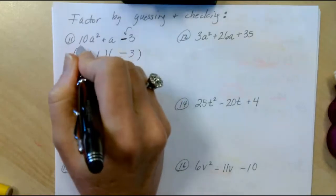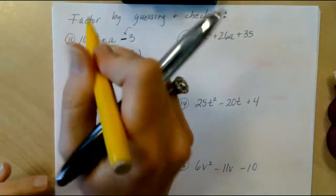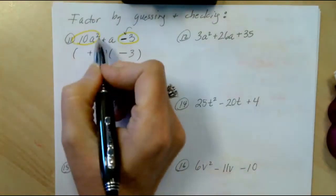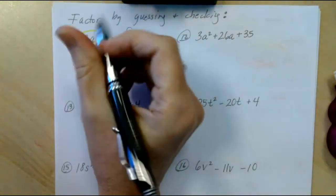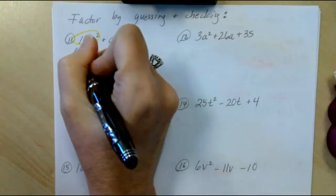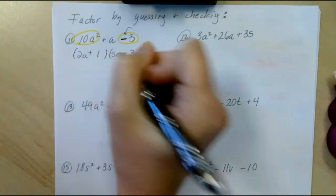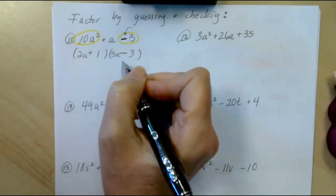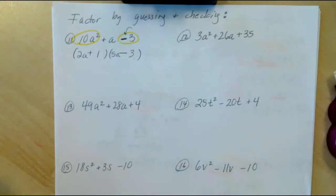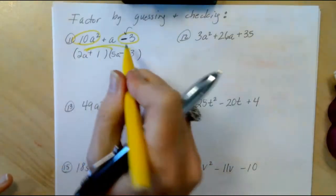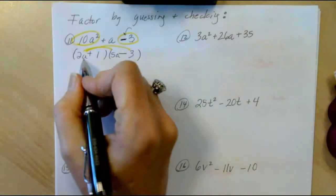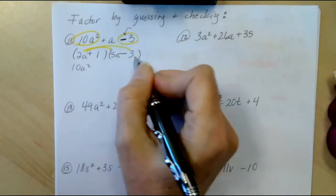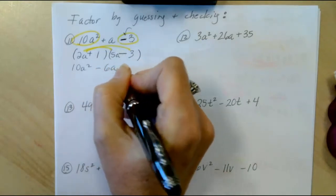Up front, remember we're only going to focus on the first term and the last term. Up front, we need to get 10a squared. So a way to get 10a squared would be 2a and 5a. So this is my guess. My guess is going to be followed by the check. Remember to do the check, we're first going to distribute the 2. So 2a times 5a is 10a squared. 2a times negative 3 is negative 6a.